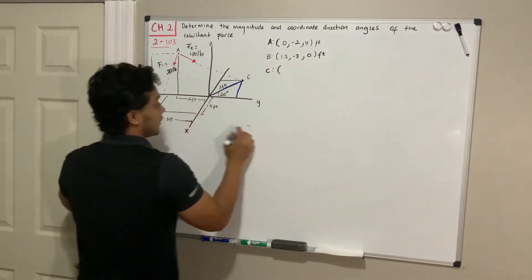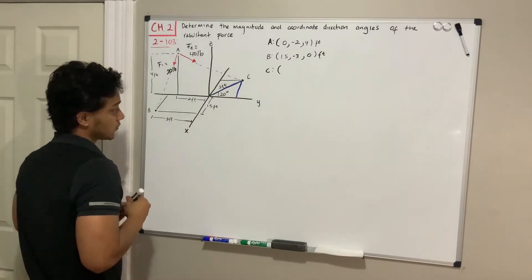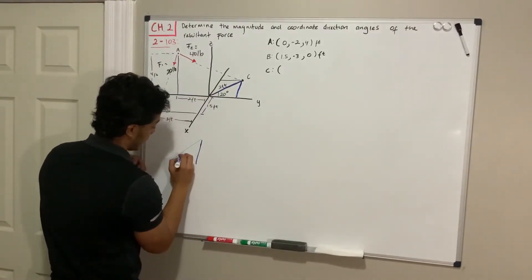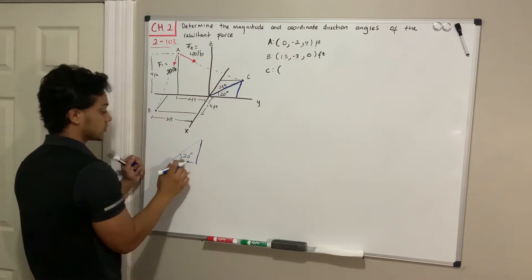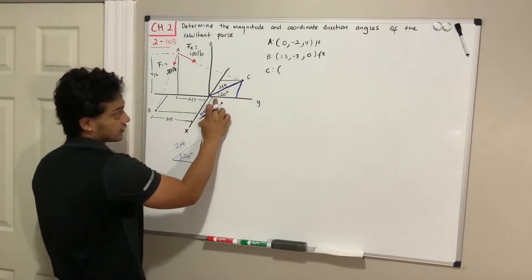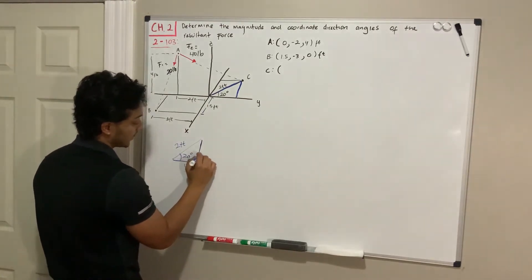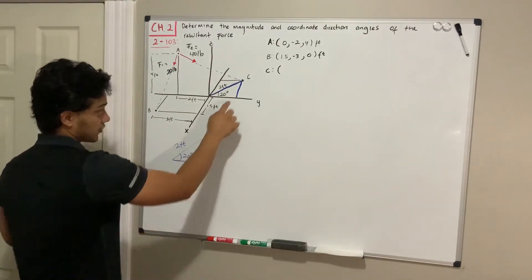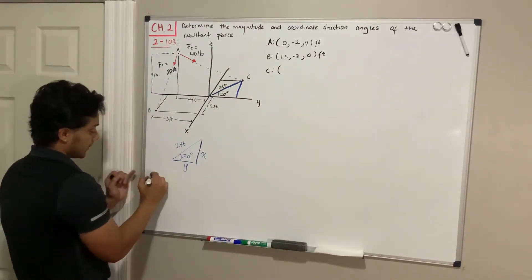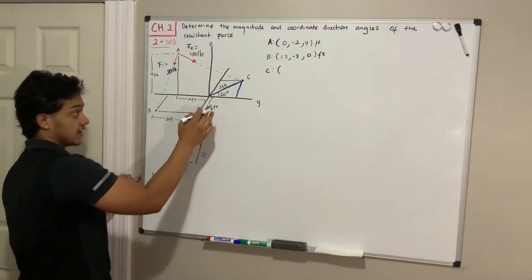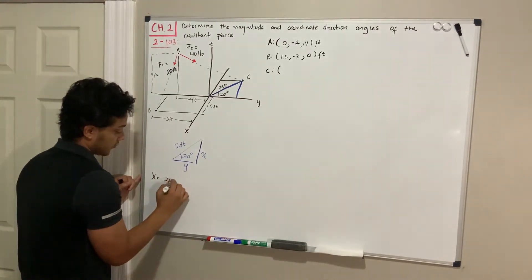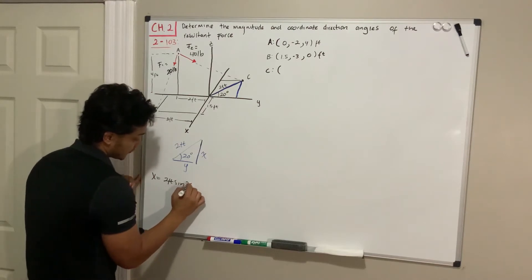Now for point C, it's given by a blue triangle in the diagram. Let's redraw this triangle to picture it better. We have a right triangle with a 20-degree angle and the hypotenuse is 2 feet. The adjacent side is the y-value and the opposite side is the x-value. So the x-component is 2 feet multiplied by the sine of 20 degrees.